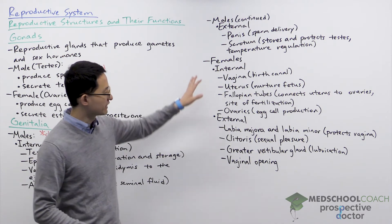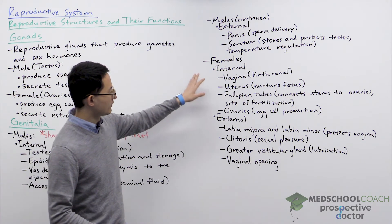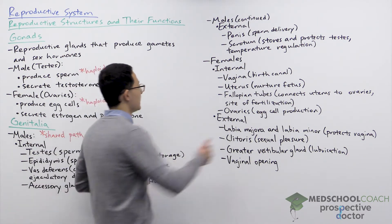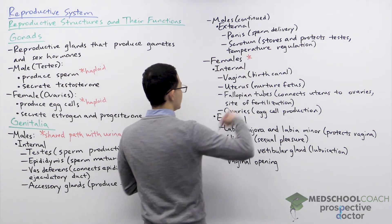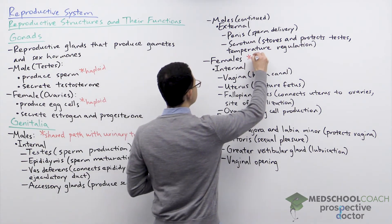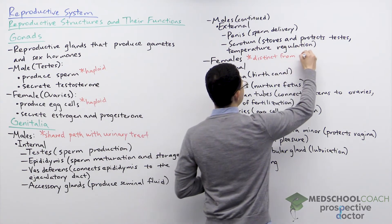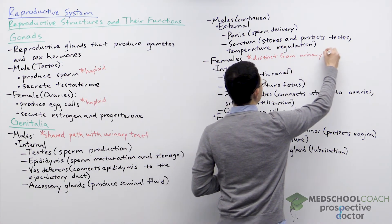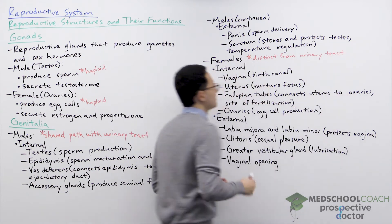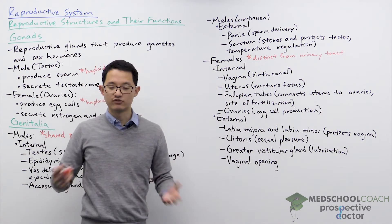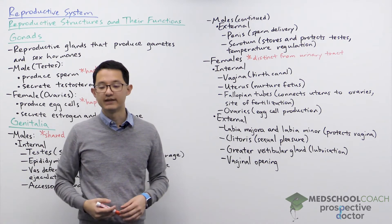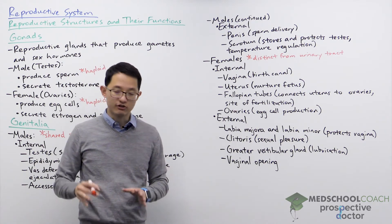So that's for males. Now we can talk about females. For females the first thing I want to note is that females' sexual organs are distinct from the urinary tract. That means the path that egg cells follow and eventually the birth of the baby, it is distinct from the urinary tract.